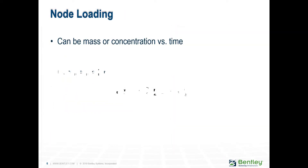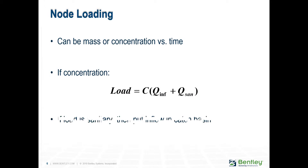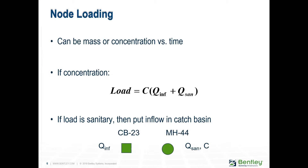If you have a concentrated industrial load — let's say a BOD — plus a rainfall at a node, and you want to specify the concentration, you put the rainfall at a nearby catch basin, not at the manhole, or else it will be assigned the higher concentration.